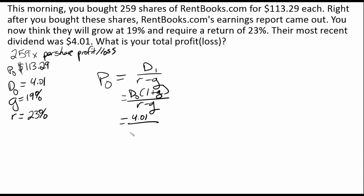So this is going to be divided by R minus G, and we do have to make sure we apply that growth rate, which is going to be 1.19. This gives us a price of $119.30. One important thing to note: if you leave that growth rate out, you could end up with a substantial difference. This calculation shows the price actually went up, but without the 1.19 growth factor, you would have seen a loss on the stock.